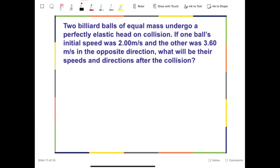Now let's take a look at another example of elastic collision. So here we have two balls, again equal mass, undergo a perfectly elastic collision, head-on collision, which means it is same direction, same line, or one dimensional. If one ball's initial speed was 2 m/s and the other one was 3.6 m/s in the opposite direction, what will be their speeds and directions after collision?